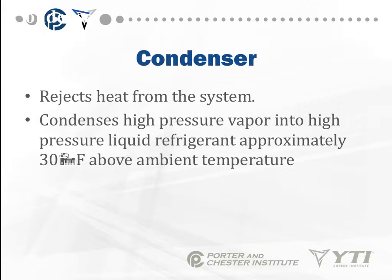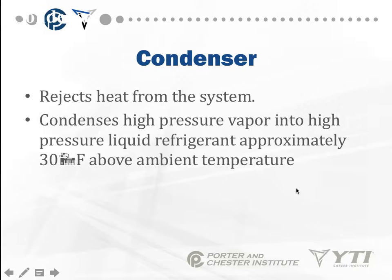The condenser rejects heat from the system. It condenses a high-pressure vapor into a high-pressure liquid refrigerant at approximately 30 degrees above the ambient temperature. For example, if the outdoor temperature is 90 degrees on a summer day, my condensing point is 30 degrees higher — so 90 plus 30 equals 120 degrees. Thinking back to the temperature pressure chart, I take that 120 degrees, find the refrigerant, and cross-reference to the pressure I should be seeing in the condenser.